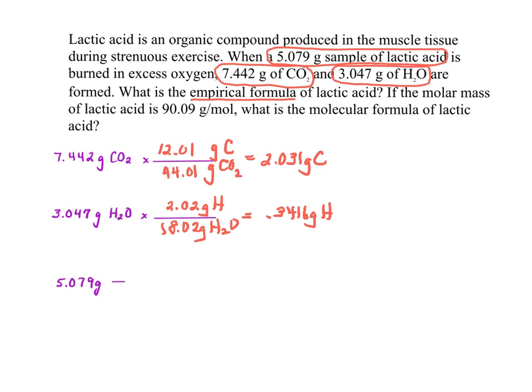Now this compound is made of carbon, hydrogen, and oxygen, just like the last example we used. So let's figure out how much oxygen there must be. We start with the total mass of the original compound minus 2.031 grams of carbon minus 0.3416 grams of H, and I get 2.706 grams of O.